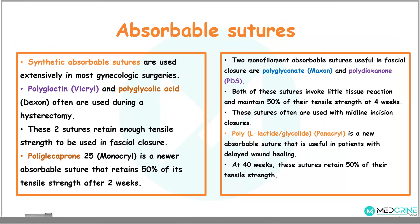Synthetic absorbable sutures are used extensively in most gynecologic surgeries. For example, polyglactin (vicryl) and polyglycolic acid are often used during procedures such as hysterectomy. These two sutures retain enough tensile strength to be used in fascia closures. Polyglycaprone-25, with the trade name monocryl, is a newer absorbable suture that retains 50% of its tensile strength after 2 weeks. Two monofilament absorbable sutures useful in fascia closures are polyglyconate and polydioxanone, and both maintain around 50% of their tensile strength at 4 weeks.